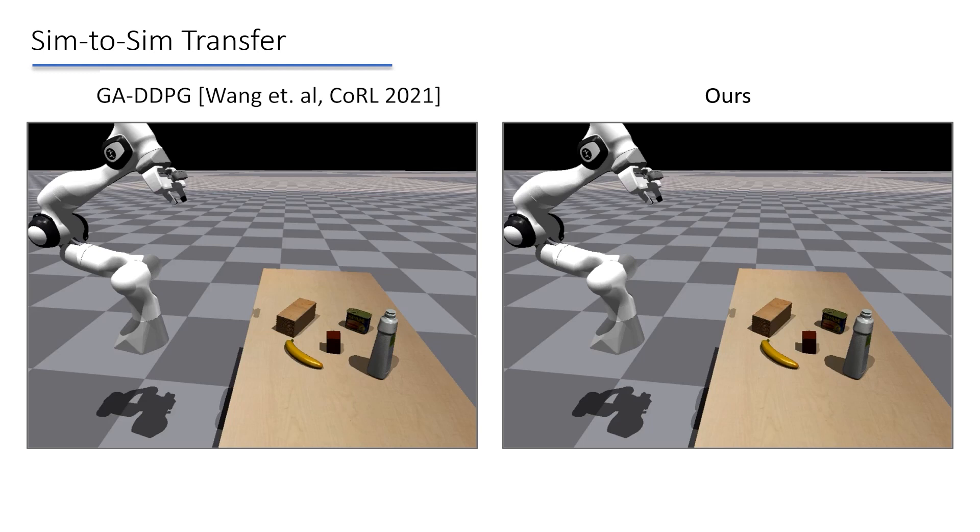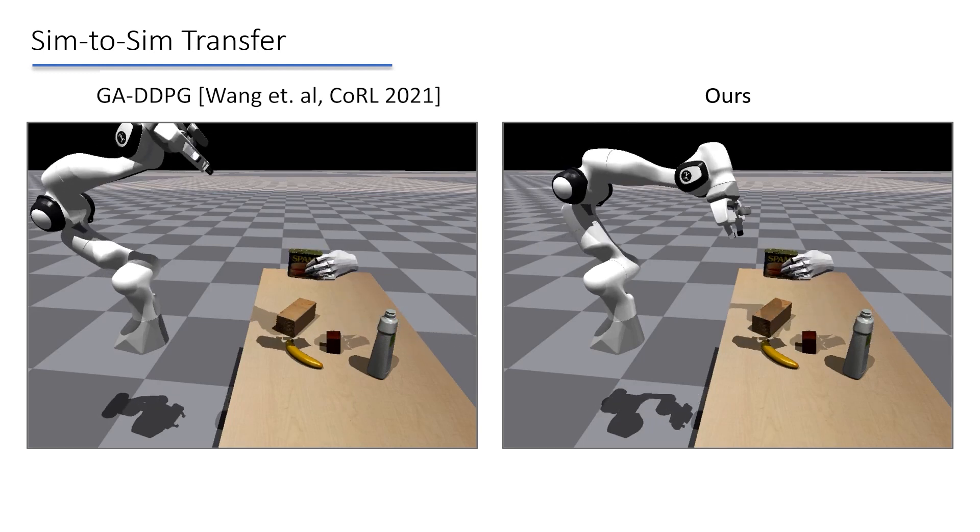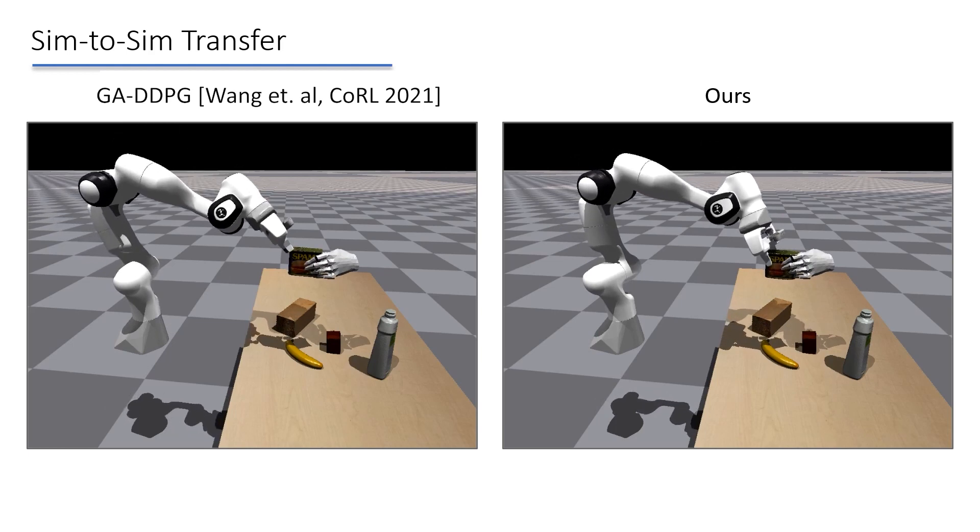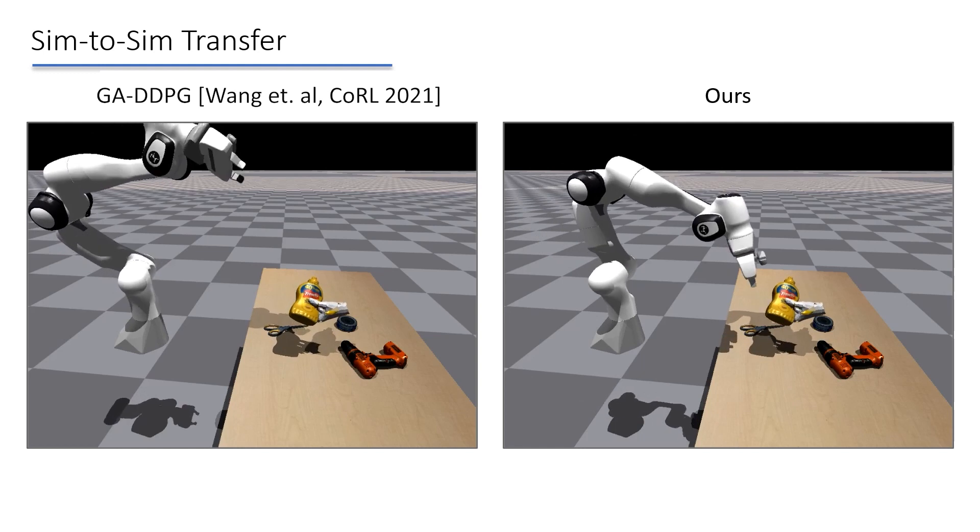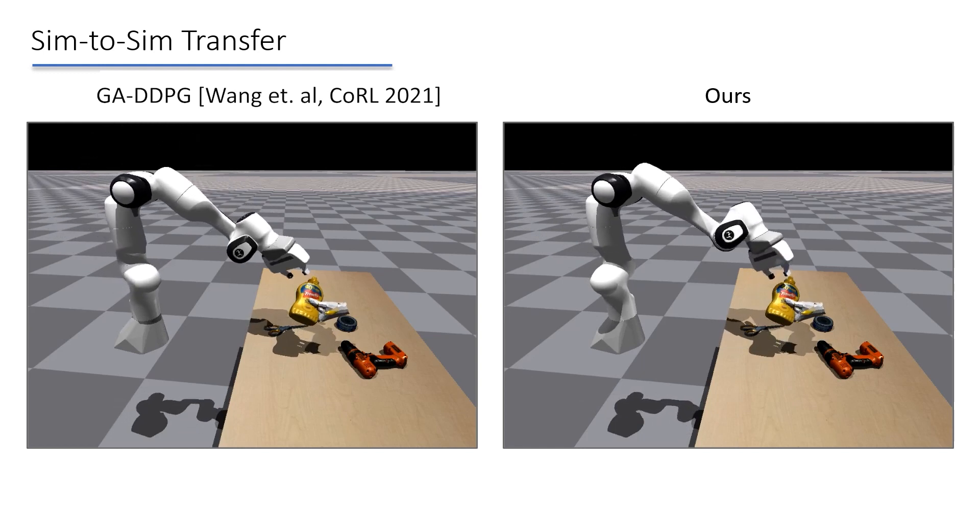We evaluate the transfer capabilities of our method and baselines by running tests with a different physics simulation engine. We find that the baseline struggles with transfer. It often misses the object completely. In contrast, our method transfers more robustly.